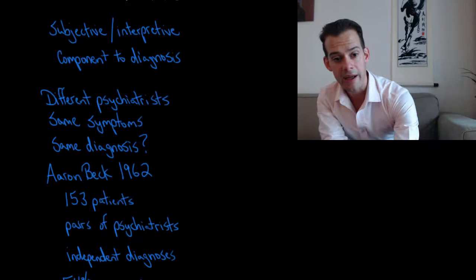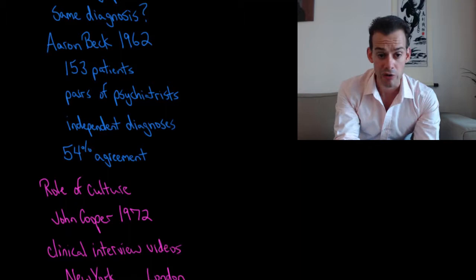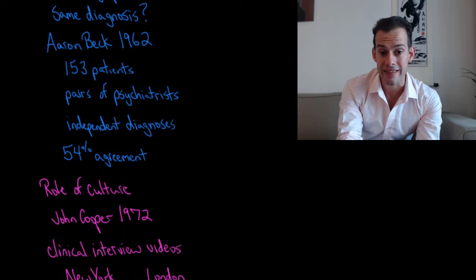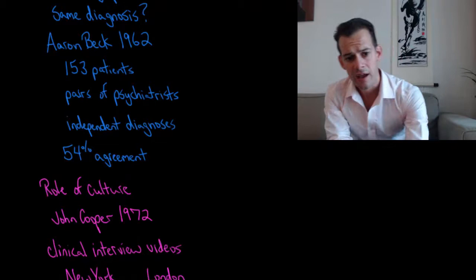In 1962, Aaron Beck and colleagues did a study where they had 153 patients and these patients were seen by pairs of psychiatrists. And then the psychiatrists each gave independent diagnoses of the patients. And rather startlingly, what Beck and colleagues found was that these independent diagnoses were only in agreement 54% of the time.